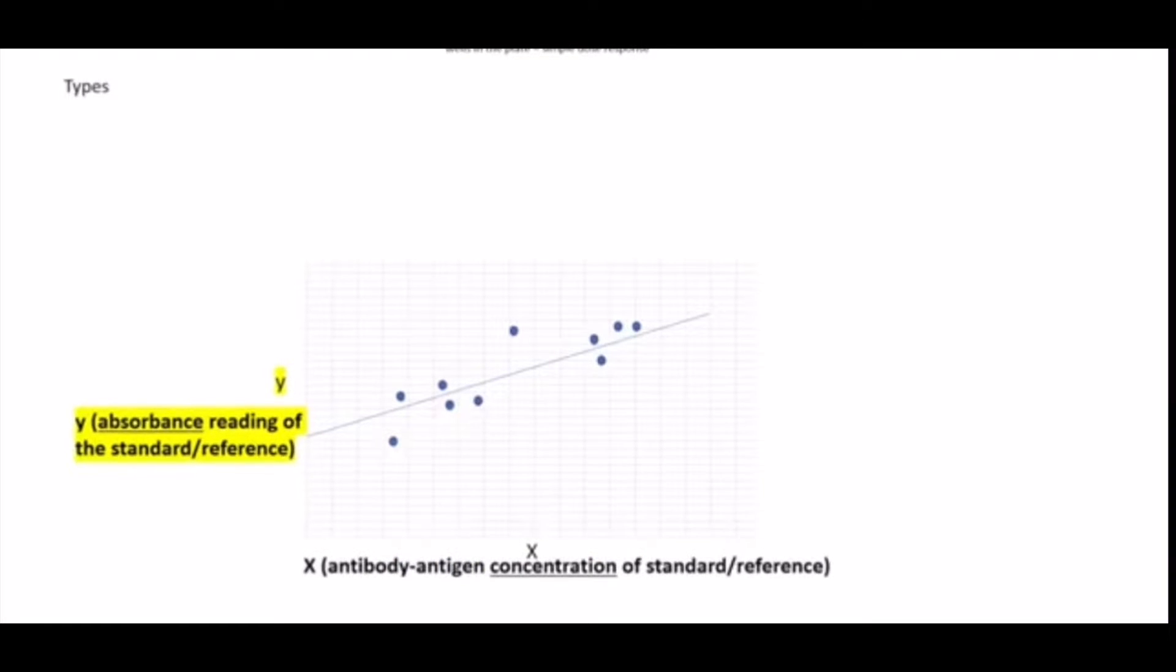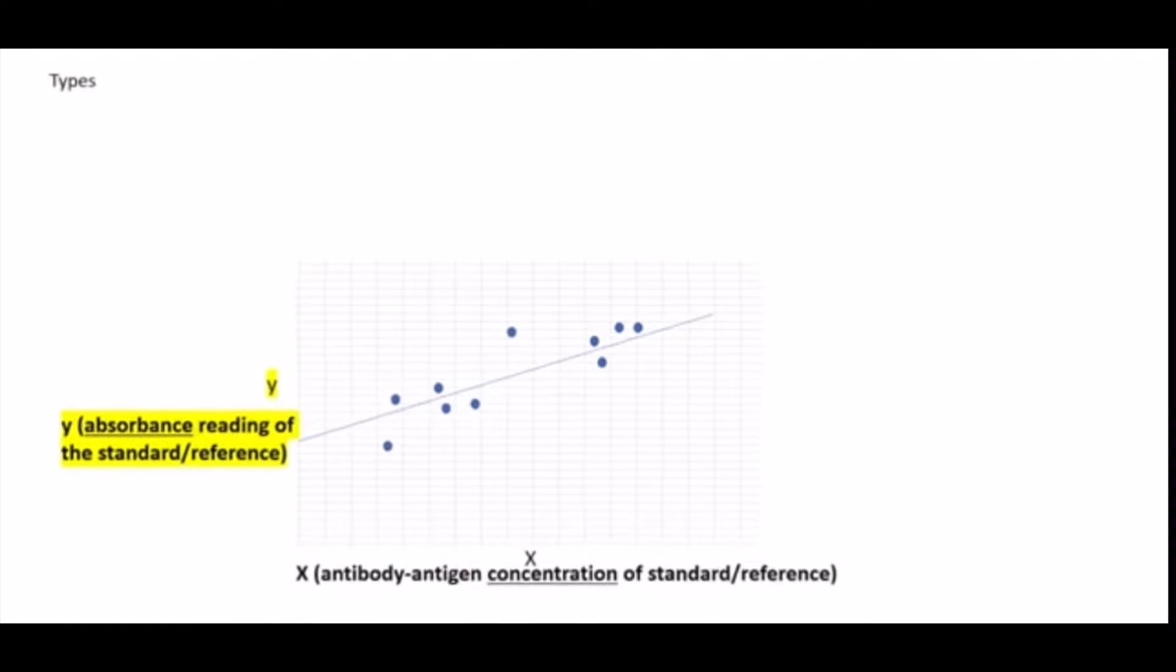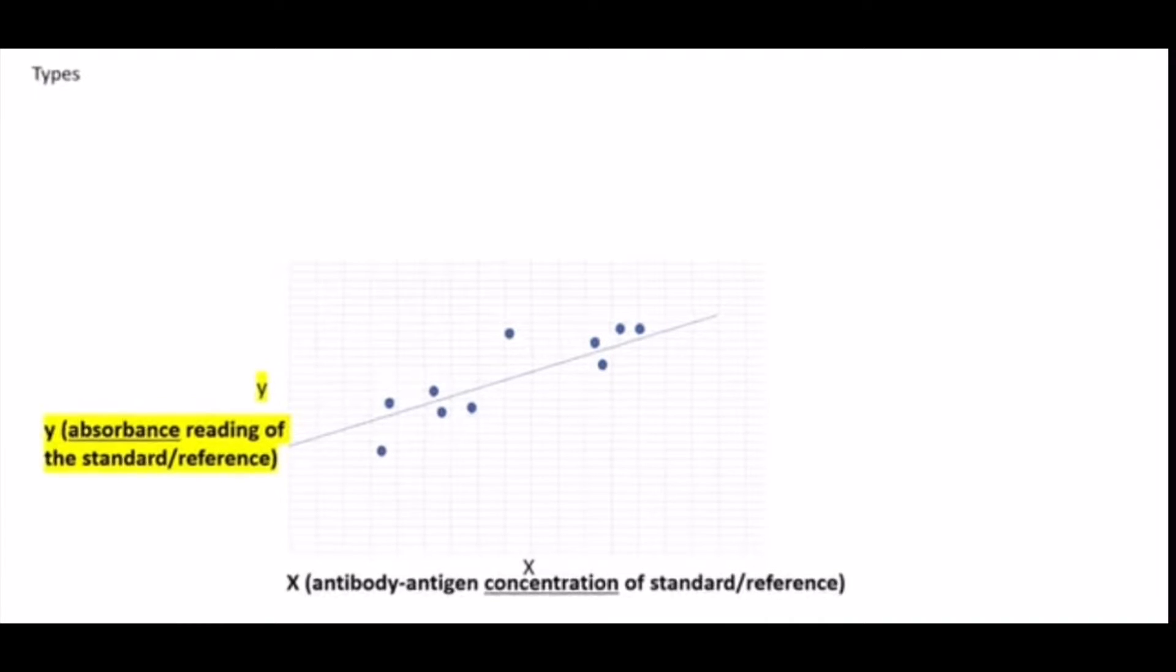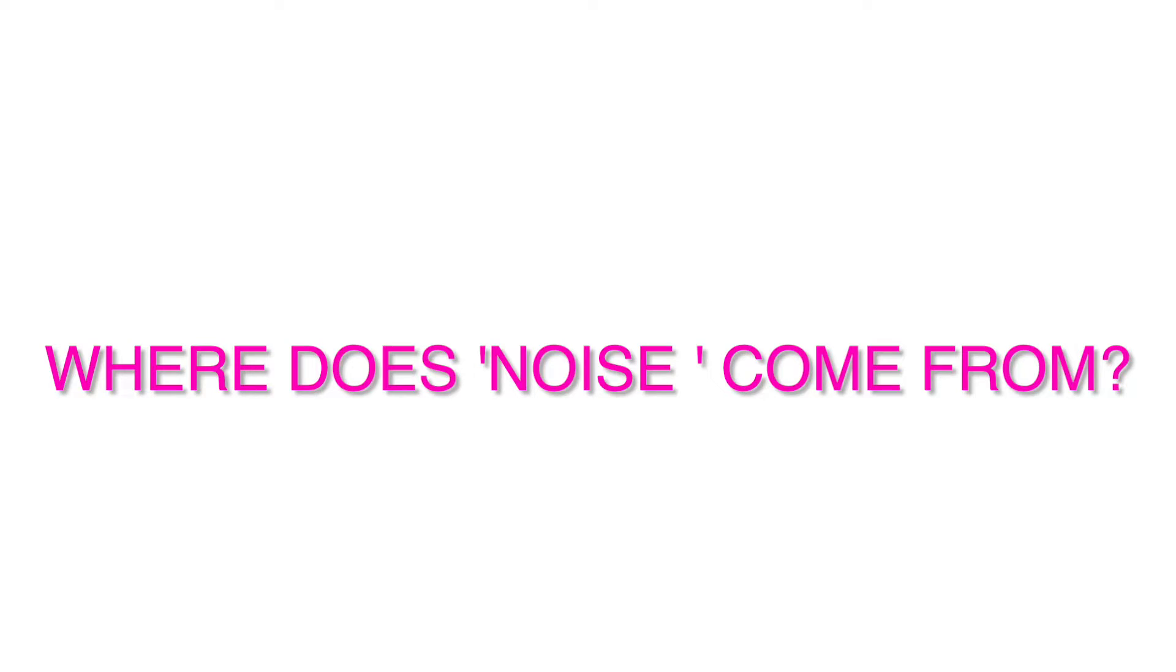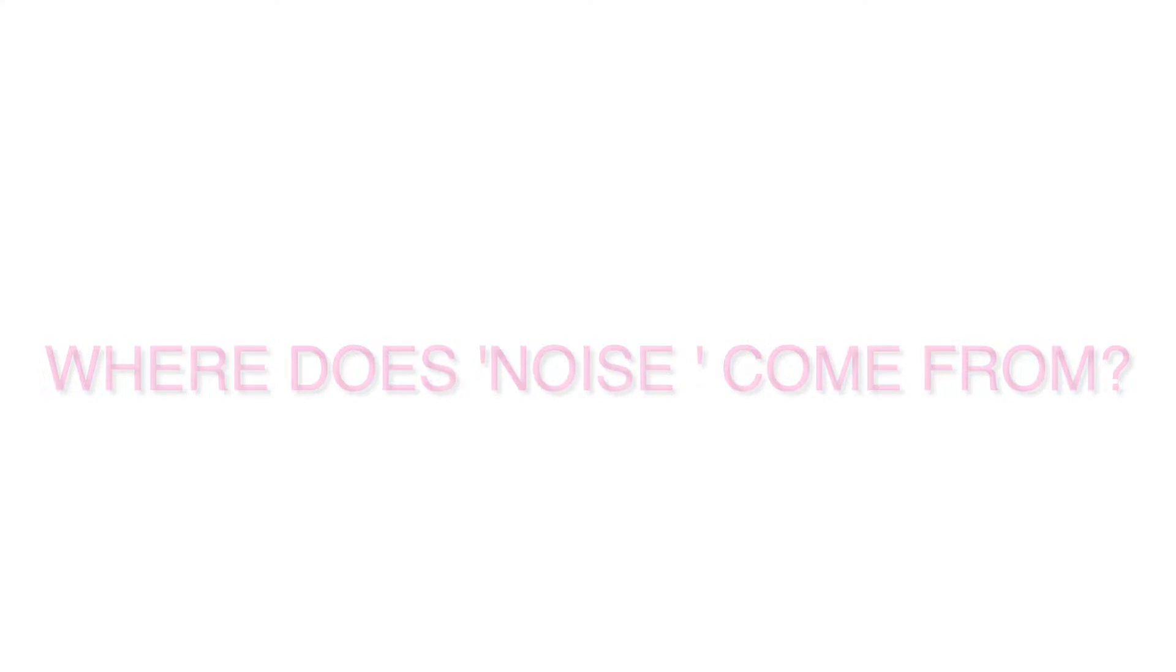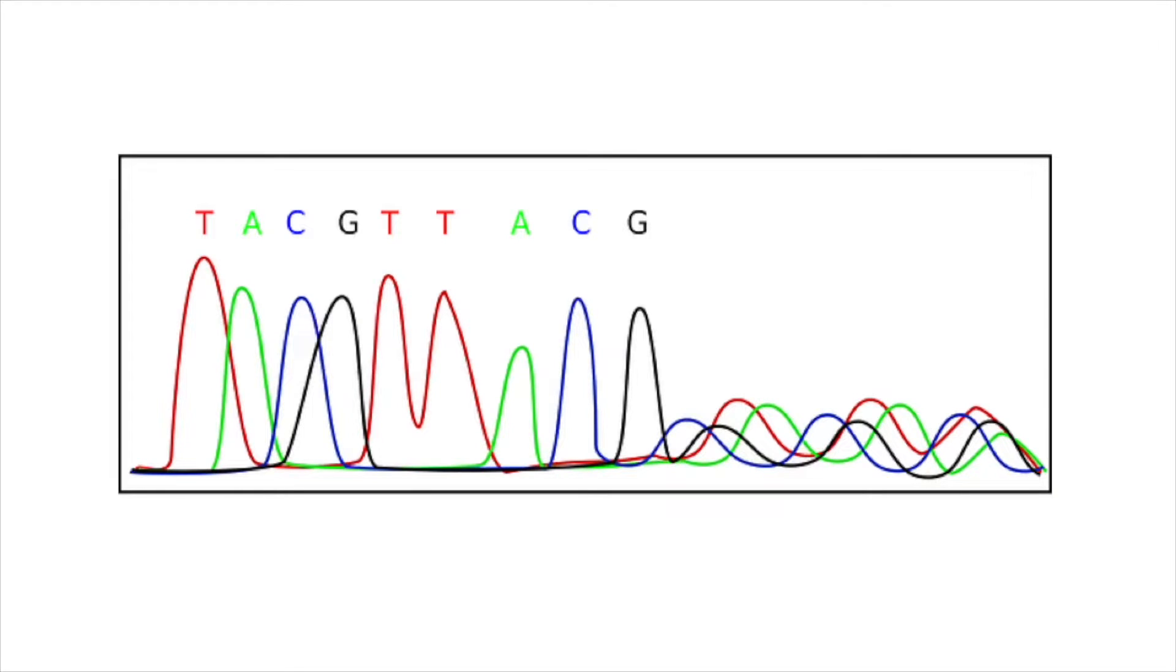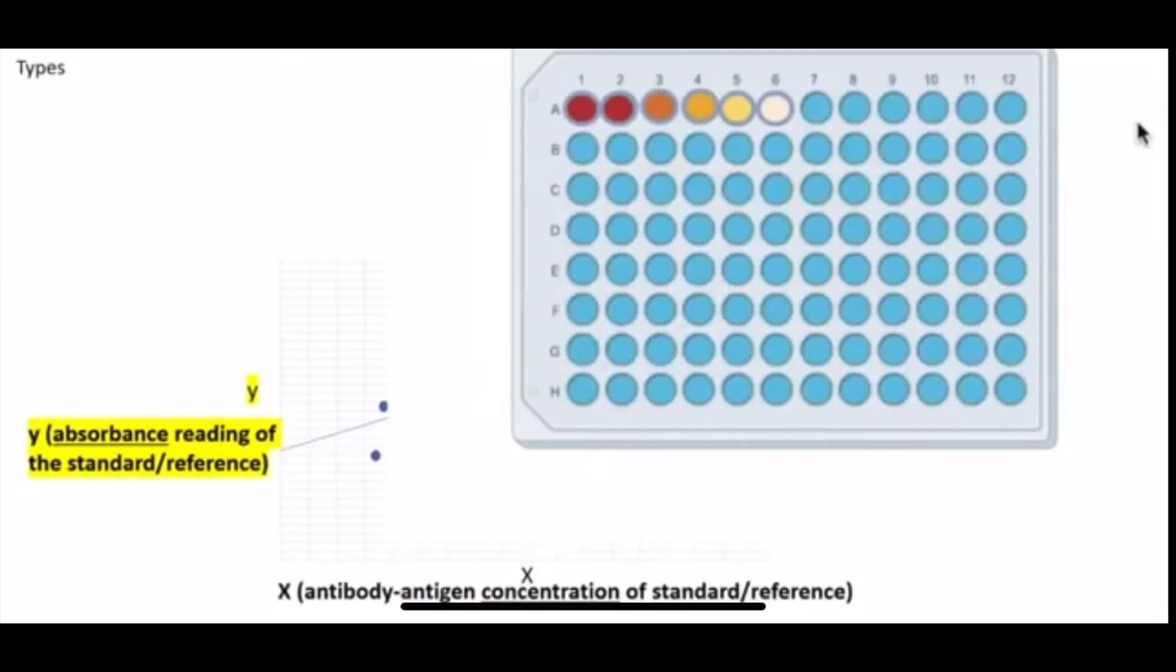And a standard curve is also called a calibration curve. So the thing to keep in mind with these sort of experiments or analysis is that in any measurement, set of measurements, there's a certain level of noise, background noise, that exists and it affects in particular the lower levels of analytes, the lower concentrations.